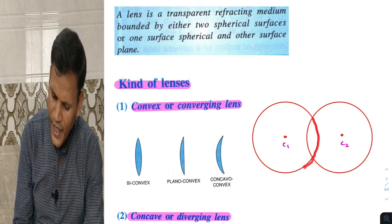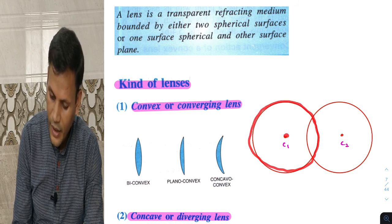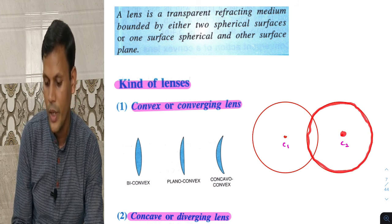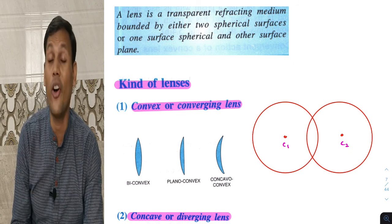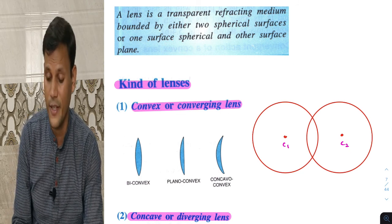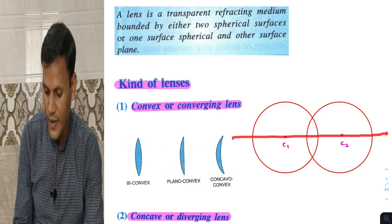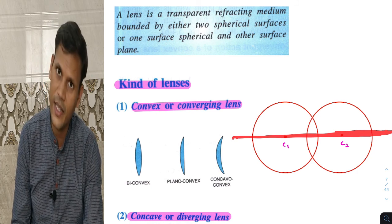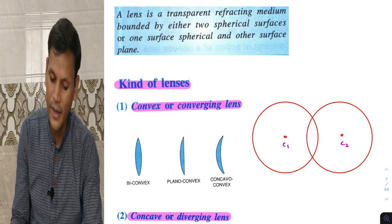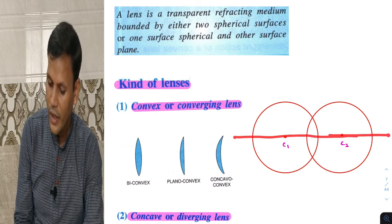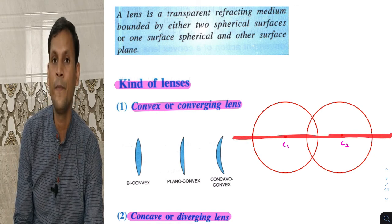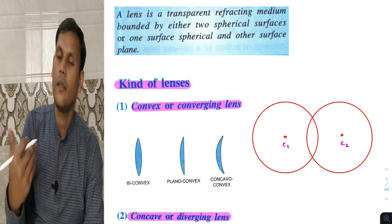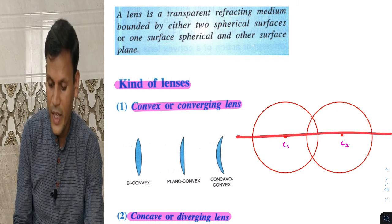If we look at this surface, its center is C1, and the center of the other sphere is C2. So C1 and C2 are the centers of the two spheres. The line joining these two centers is called the principal axis.